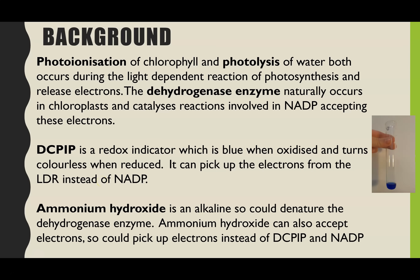The last bit of background is on ammonium hydroxide, which is the variable we're changing. This is an alkaline solution, so it could be that because it's alkaline, it denatures the dehydrogenase enzyme, and therefore it's no longer able to catalyze these reactions. Or it could be that ammonium hydroxide has the ability to accept electrons, so if it picks up the electrons instead of the DCPIP or the NADP, the DCPIP won't go from blue to colorless.